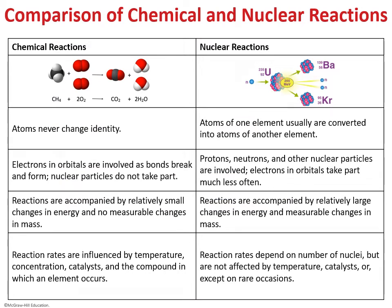In nuclear reactions, unlike chemical reactions, atoms change their identity — an atom of one element is converted to an atom of another element. In a chemical reaction, atoms never change their identity; if you start with carbon, you end with carbon. In a nuclear reaction, the nuclear identity changes. In chemical reactions, only electrons are involved — bonds are broken, shared, or formed. In nuclear reactions, electrons are mostly not involved; what's involved are protons, neutrons, and other nuclear particles in the nucleus.